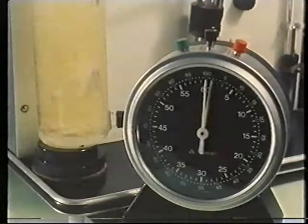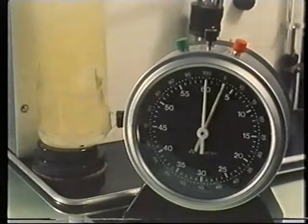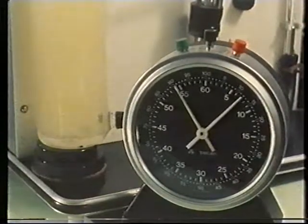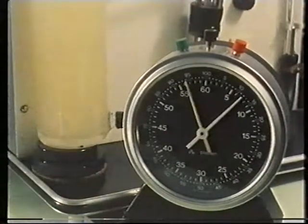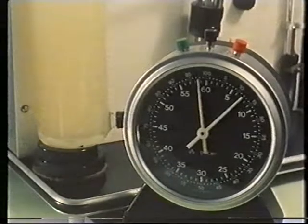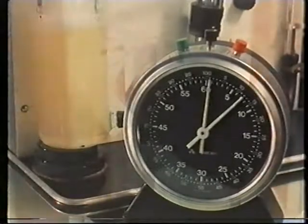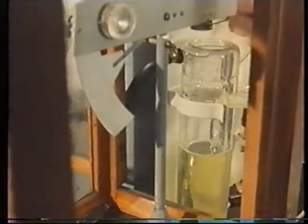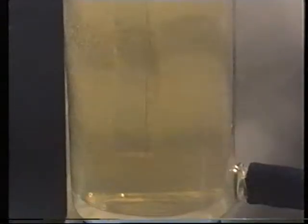The ability of an oil to release entrained air is measured during an air release test. Compressed air is blown through preheated oil. After seven minutes, the airflow is stopped. The time taken for the volume of entrained air to be reduced is recorded.